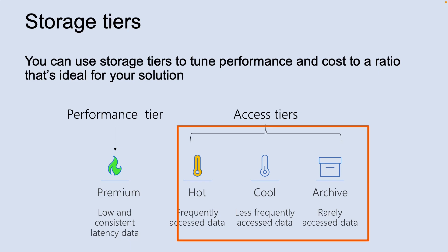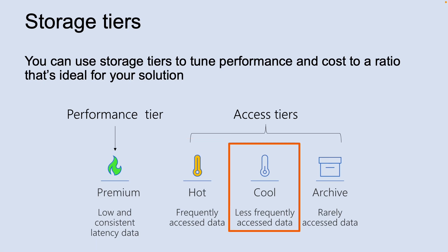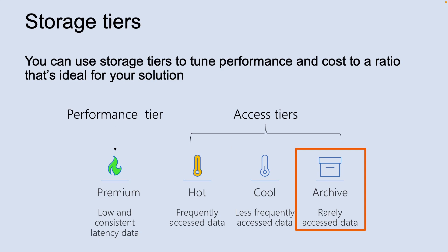The hot storage is optimized for storing data that is accessed frequently. The cool storage is optimized for storing data that is infrequently accessed and stored for at least 30 days. The archive storage is optimized for storing data that is rarely accessed and stored for at least 180 days, with flexible latency requirements — and these latencies can be in the order of hours.